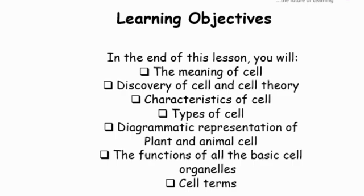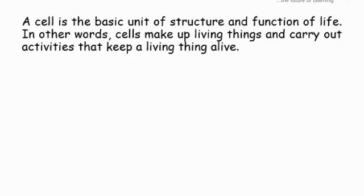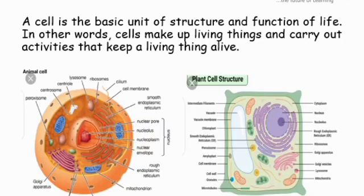And finally, some basic cell terms. Now let's look at the definition of cell. A cell is a basic unit of structure and function of life. In other words, cells make up living things and carry out activities that keep a living thing alive. This is a diagram of animal cell and this is a diagram of plant cell.